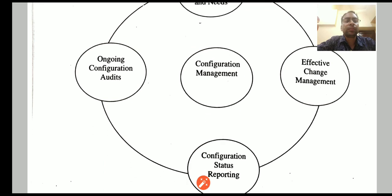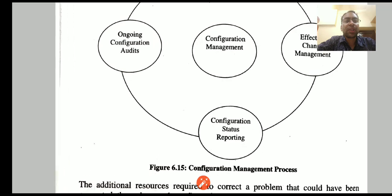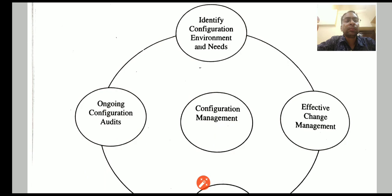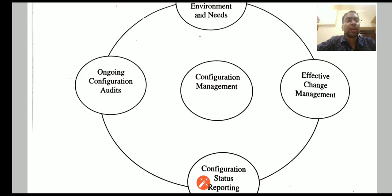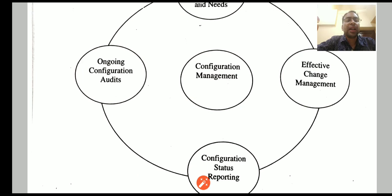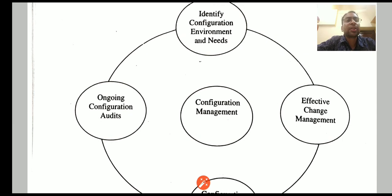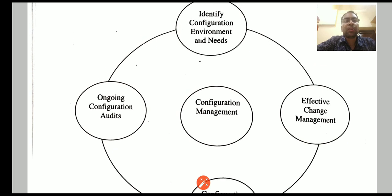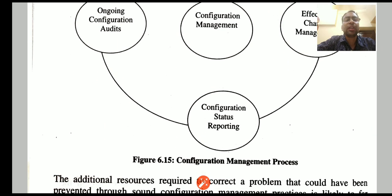This is a configuration management process diagram that helps you understand the relation between audits, environment management, change control, and status reporting. It consists of all the functions — configuration management at the center, surrounded by the environment, the audits, effective change management, and status reporting.